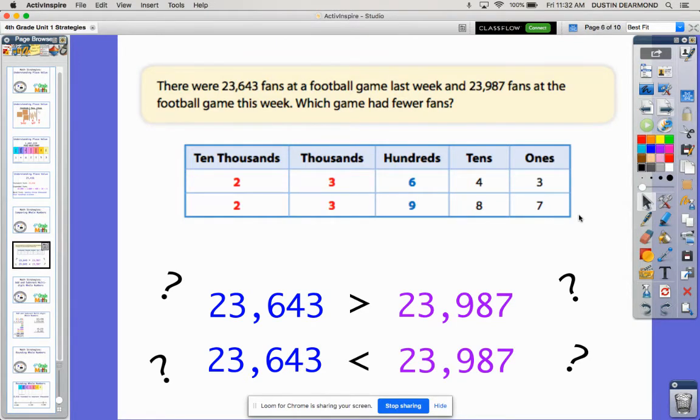Now remember, when you're trying to compare numbers, you start with the largest place value. So I'm going to start with the ten thousands place, and I know both of them have a digit of two. When they're the same digit, that's exactly the same, so we're going to look at the next digit to the right. In the thousands place they also have the same digit—three. Both of them have 23,000 to start the number.